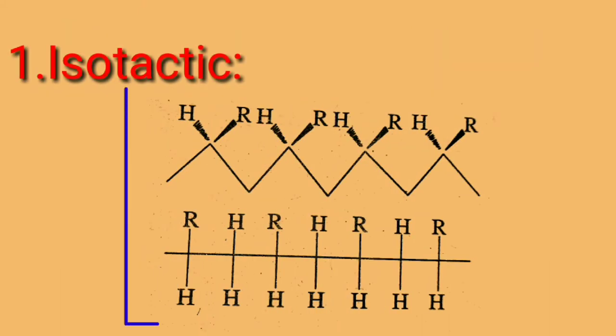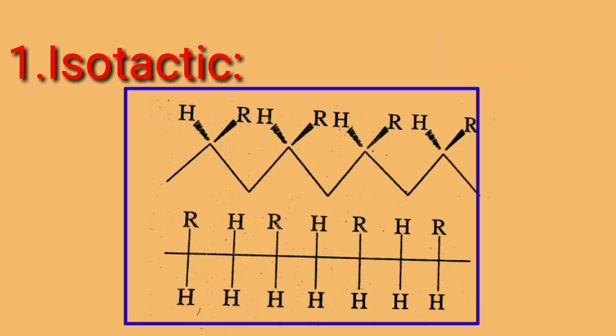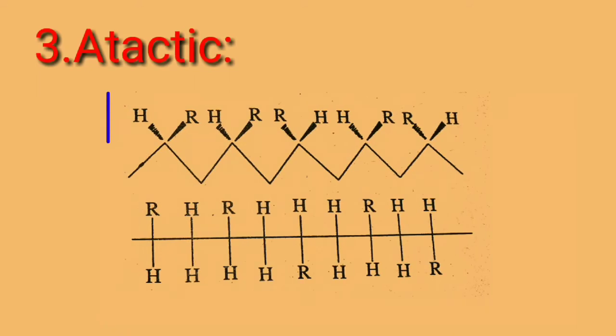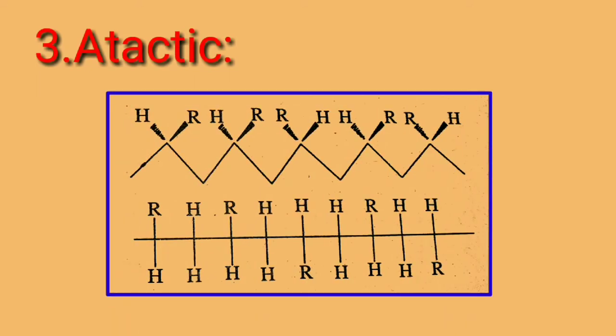First is isotactic — in this, all the side chains are arranged on the same side of the polymeric backbone. Second is syndiotactic — in this, the side chains are arranged alternately on either side of the polymeric backbone. Third is atactic — in this, all the side chains are arranged randomly on either side of the polymeric backbone.